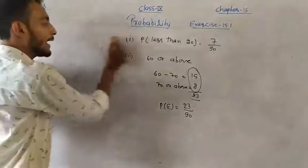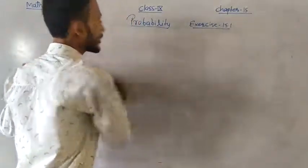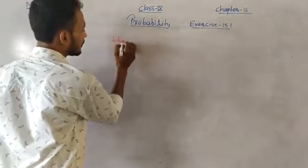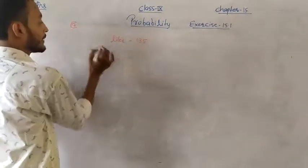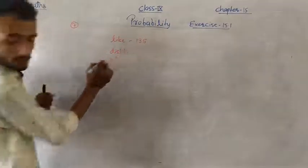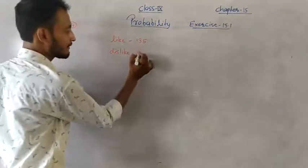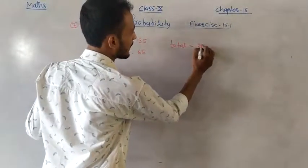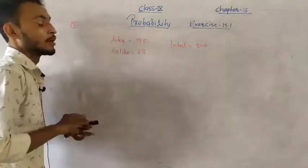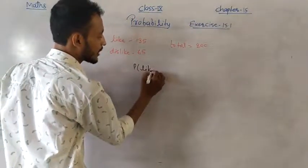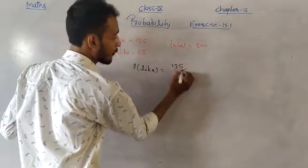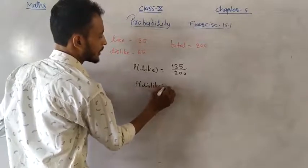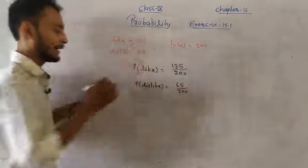Question 7: An opinion poll — like and dislike data is given. Those who like = 135; those who dislike = 65; total = 200. Probability of like = 135/200. Probability of dislike = 65/200.